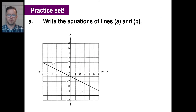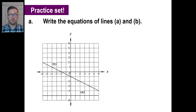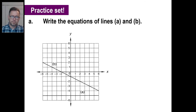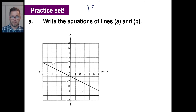Let's try the practice set. Give A a quick whirl — it's the horizontal line — then pause it and come back. The value of A is going to be the value of the y. This thing is going across the y-axis at negative 5. So all you need to do is write y is equal to negative 5. That's it, you're done.